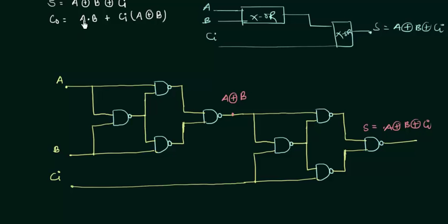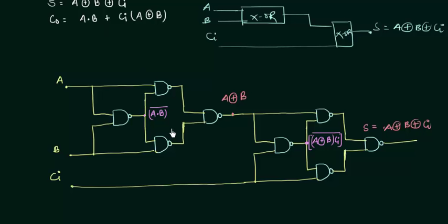The carry output requires A AND B, and it requires CI AND (A XOR B). It is simple but a little bit tricky. At this point we are having A AND B and then its whole complement, and at this point we are having A XOR B and CI and then the complement of the whole. Now we want the OR operation between (A AND B) and (CI AND A XOR B), so what we do is take this point and this point and simply pass it to another NAND gate.